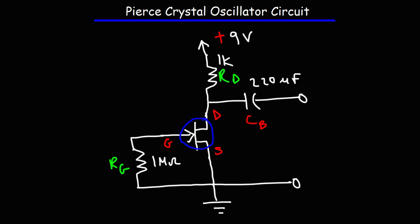The crystal oscillator is going to be connected between the gate and the drain terminal of the JFET. The crystal oscillator symbol is represented by two metal electrodes separated by a quartz crystal. There's also a bypass capacitor between the crystal and the drain of the JFET — I've used a 220 microfarad value here as well.